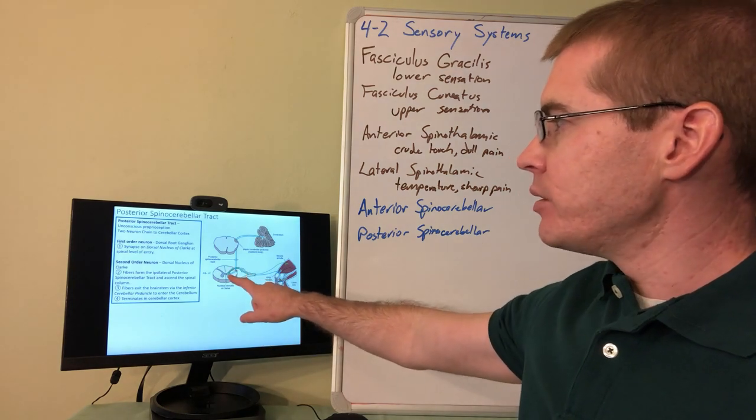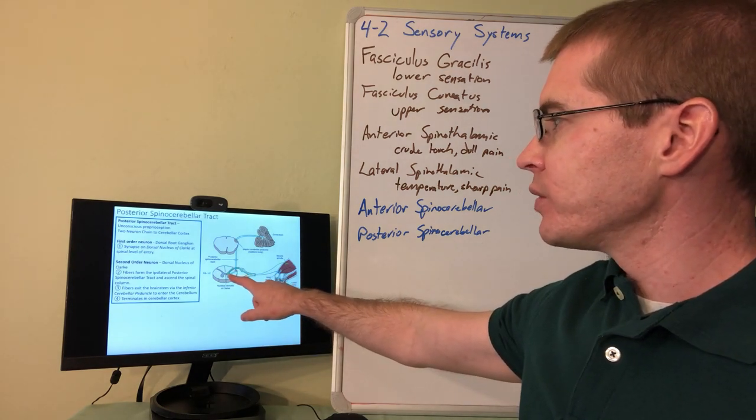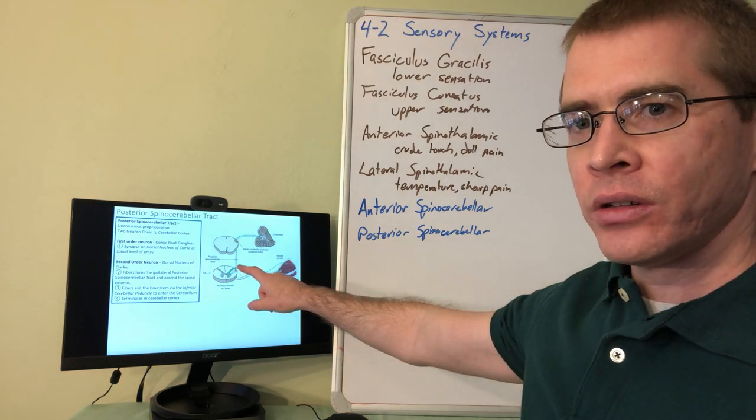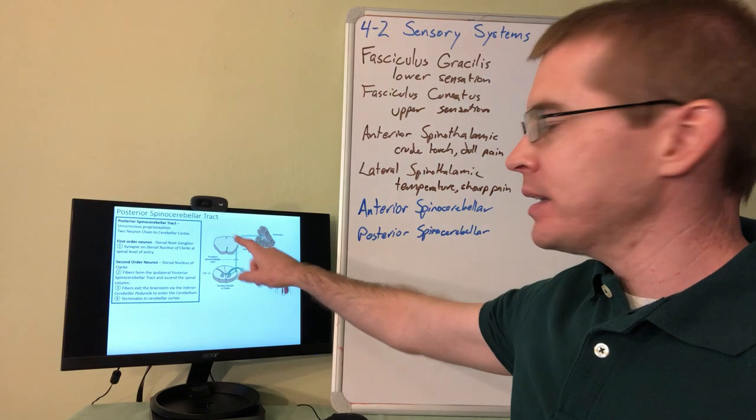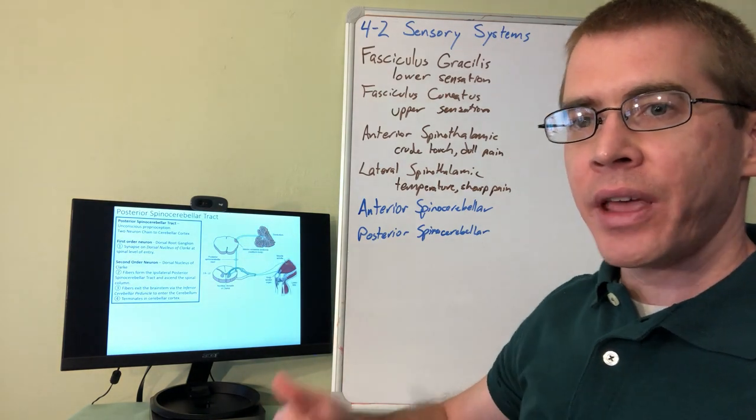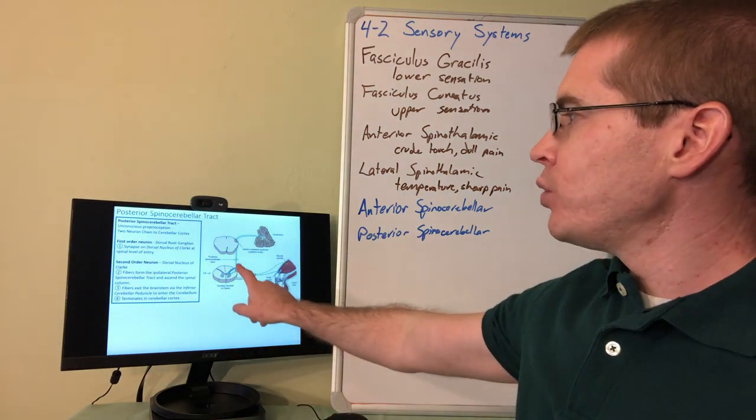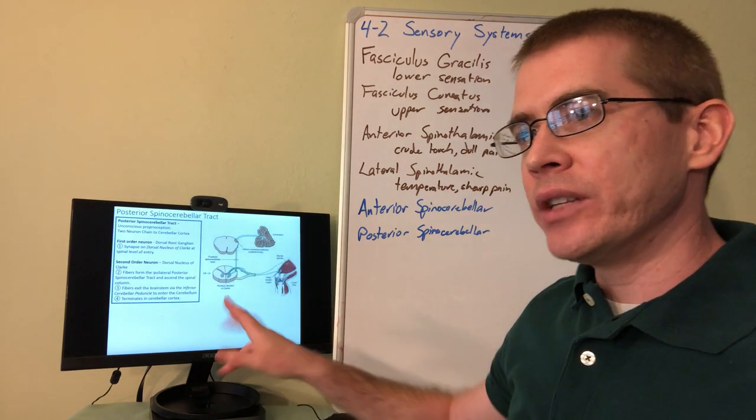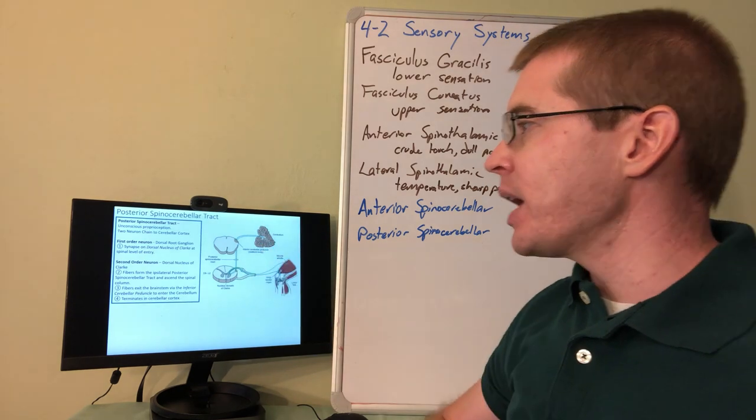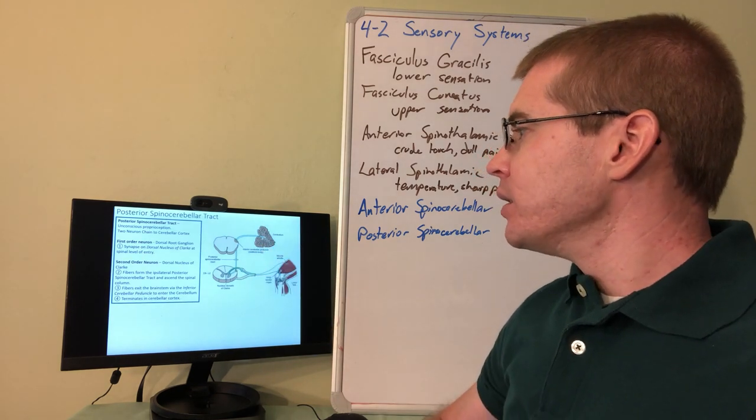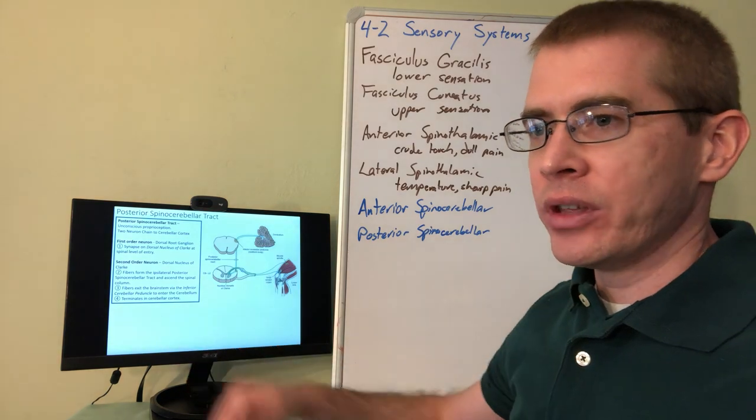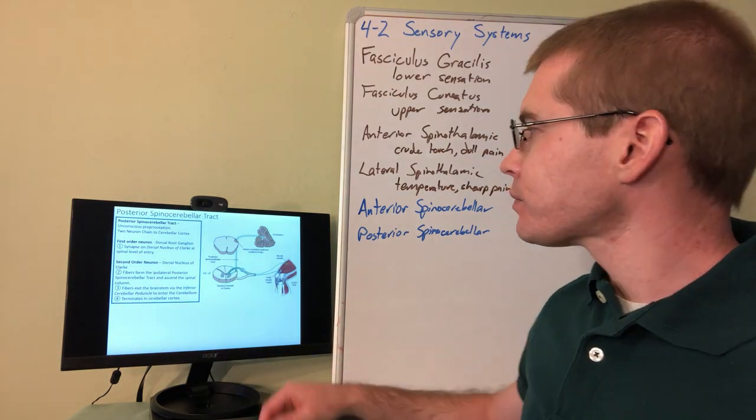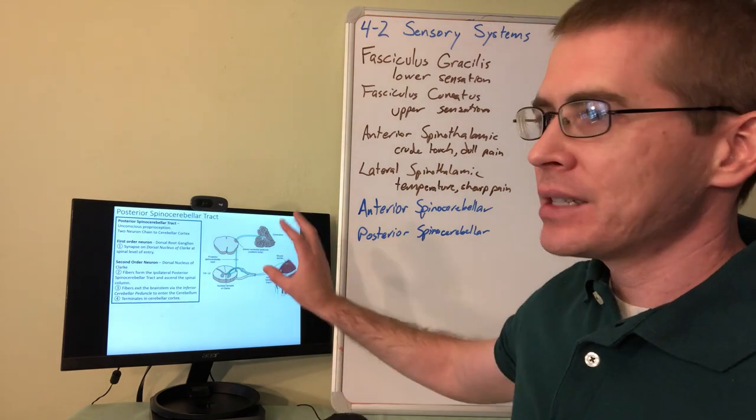Then those neurons from the dorsal nucleus of Clark will curve back toward the outer portion of the spinal cord and ascend ipsilaterally, meaning the same side, and it will travel through the inferior cerebellar peduncle on the spinal cord to get to the ipsilateral side of the cerebellum. So it will terminate then within the cerebellum and we'll talk about the cerebellum in much more detail later on. So this tract is entirely ipsilateral.